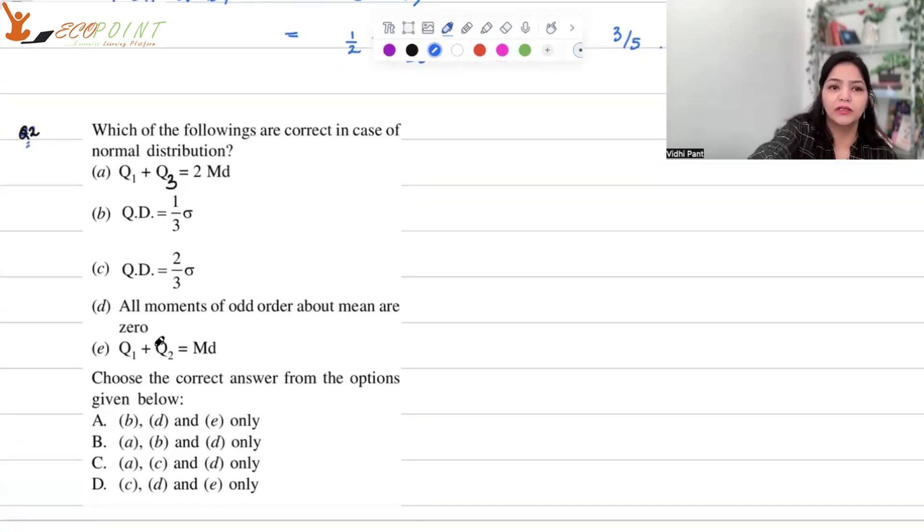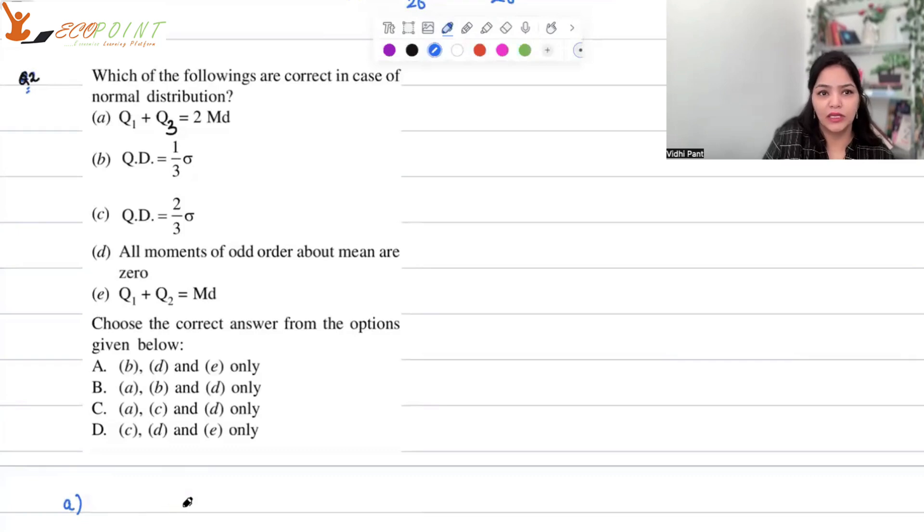The first statement, that is statement A, Q1, which is the first quartile, and Q3, which is the third quartile, is equal to twice of median. This is approximately correct. It's a correct statement for a symmetric distribution. Because if you look at a symmetric distribution, you have Q1 here, Q2 which is also your median, and Q3 here, and this relation will hold true.